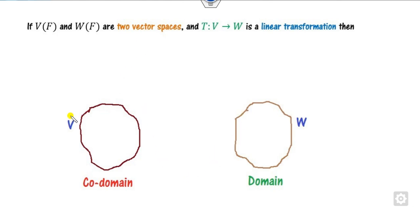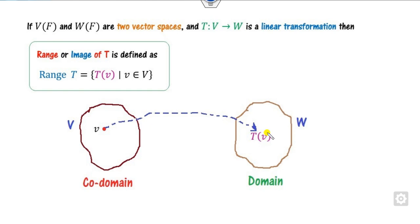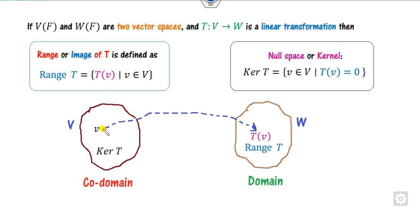Suppose you have two vector spaces V and W — one is called the co-domain and the second is called the domain. If you collect all those elements from the domain, that is T of V, we call that the range. If you collect all those elements of V from the co-domain such that the range becomes zero, we call that the kernel. The kernel will always be elements of the co-domain, while the range is elements of the domain.